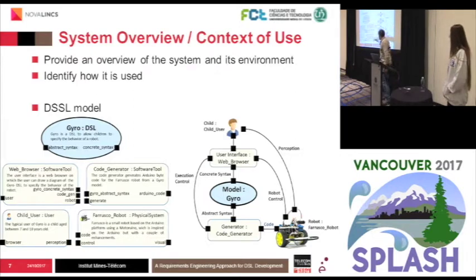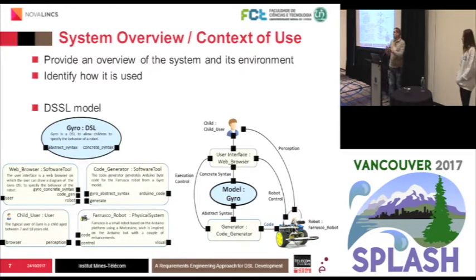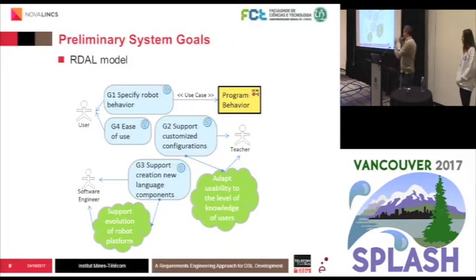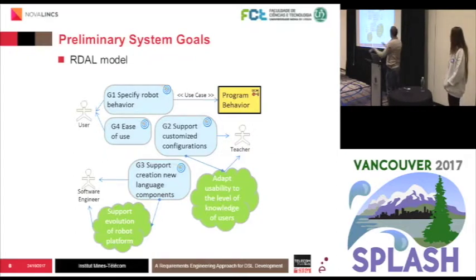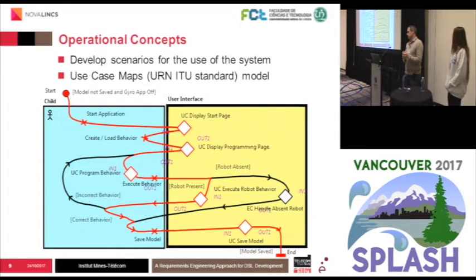We can first define on the left entity types for entities that interact with the description and their interaction points, and then instantiate them in several context language models to model the different contexts in which your DSL is going to be used. Another practice is to capture your preliminary system goals — we do this with the RDAL language and can link a goal to the stakeholders from which it comes, to rationales, and also to the DSL that is supposed to achieve the goal.